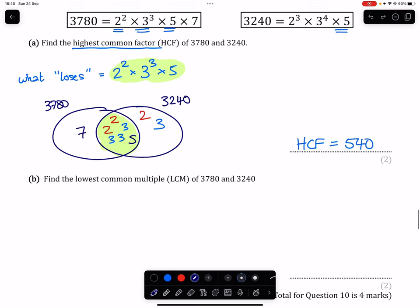Part B, find the lowest common multiple of those two numbers. Well, when we're looking for the lowest common multiple, we're looking for what wins out of the factors of 2, 3, 5, and 7.